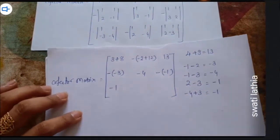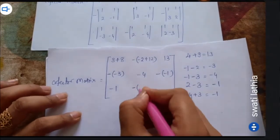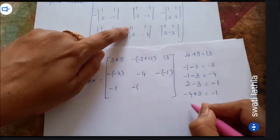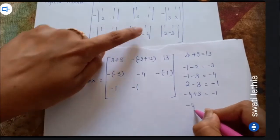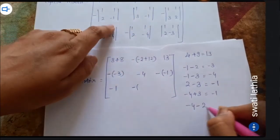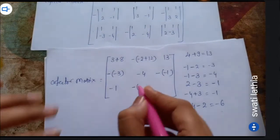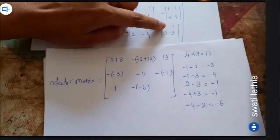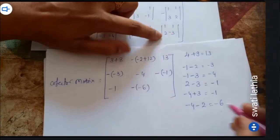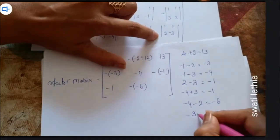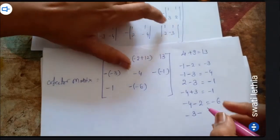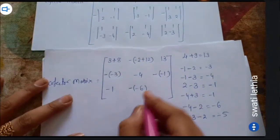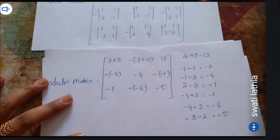Next: minus 1 into minus 4 is 4, minus 2 into 1 is minus 2, so that equals minus 6. Last one: 1 into minus 3 is minus 3, minus 2 into 1 is minus 2, giving minus 5.